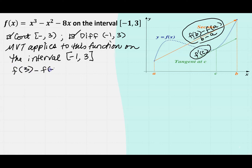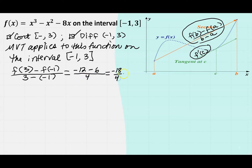Let's find f(3) minus f(negative 1) all divided by 3 minus (negative 1). When you plug into the function, f(3) gives 27 minus 9 minus 24, which is negative 12. And f(negative 1) gives negative 1 minus 1 plus 8, which is 6. All divided by 3 minus negative 1, which is 4. That is negative 18 over 4, reduced to negative 9 over 2.